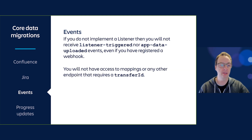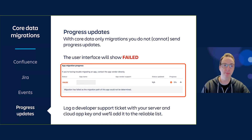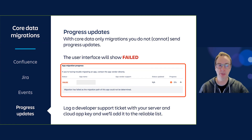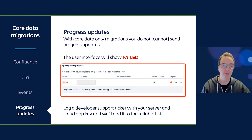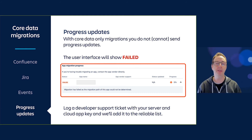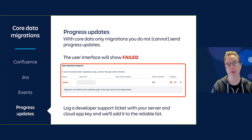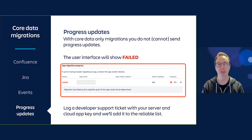With core data only migrations you cannot send progress updates, so the interface will just show failed. What you need to do is log a developer support ticket with your server and cloud app keys, and we'll add it to a reliable list which indicates your app is a core data only migration — it will then appear as completed at 100% straight away in app migration.